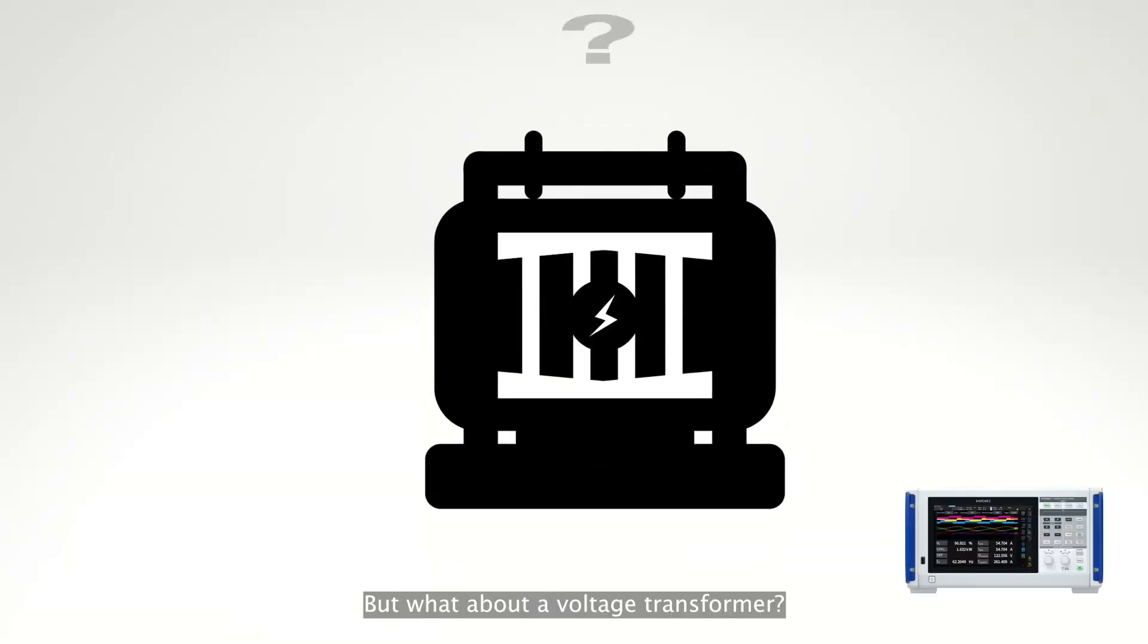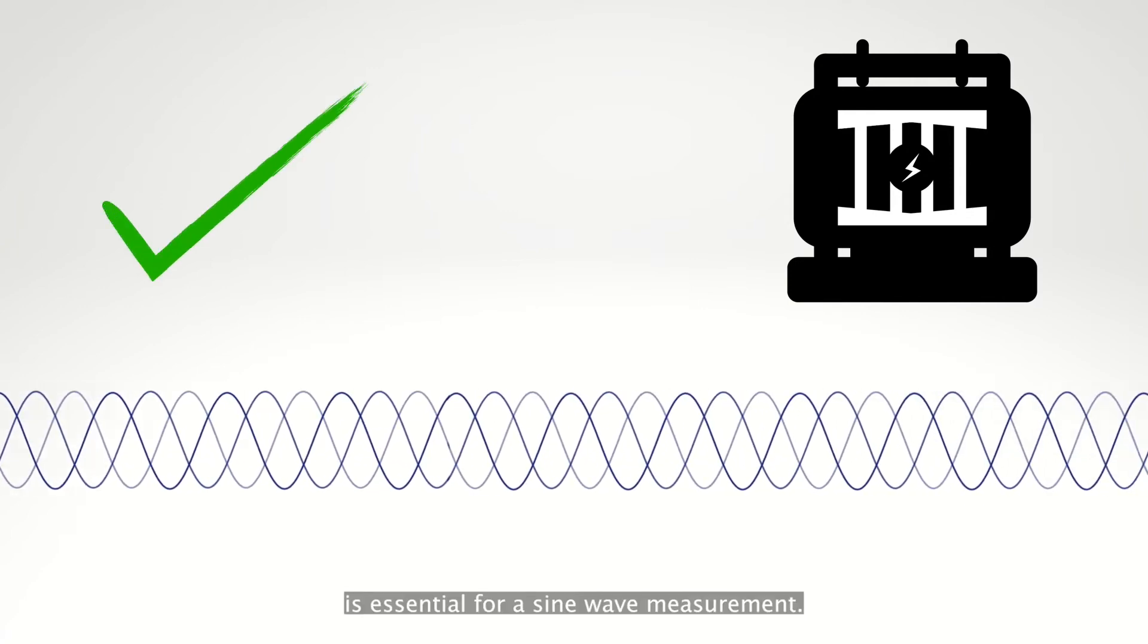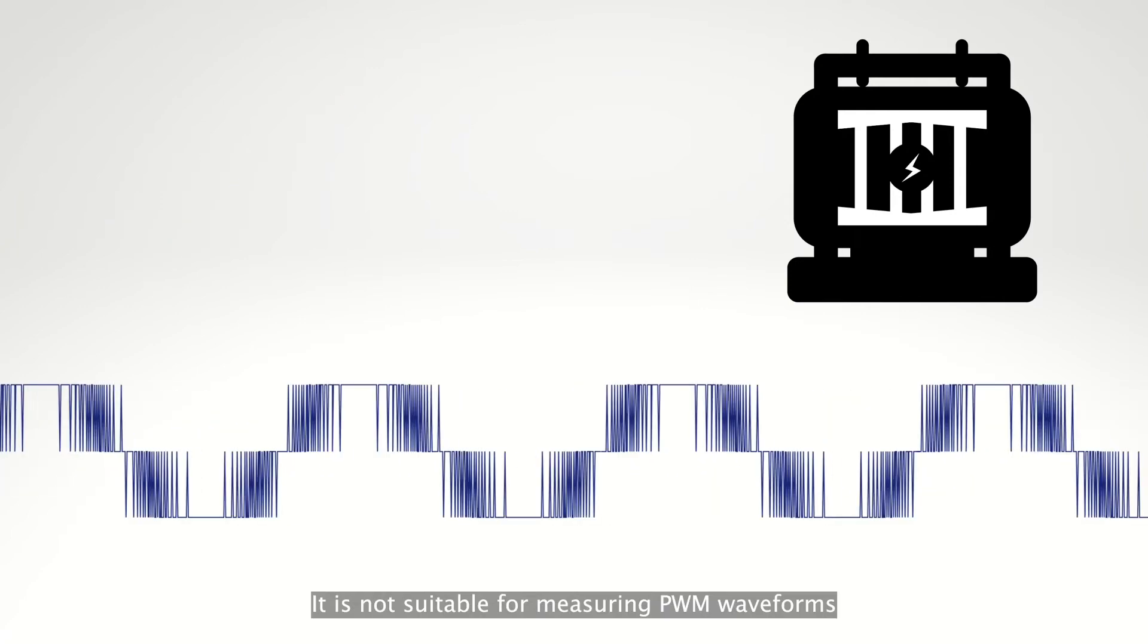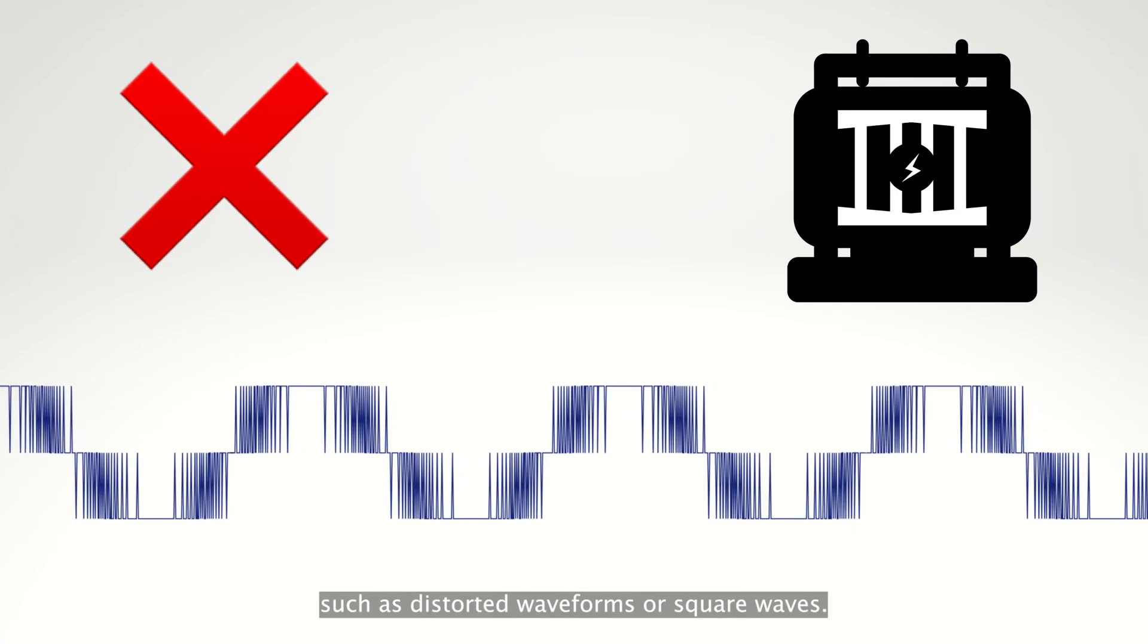But what about a voltage transformer? A voltage transformer, or VT, is essential for a sine wave measurement. It is not suitable for measuring PWM waveforms such as distorted waveforms or square waves.